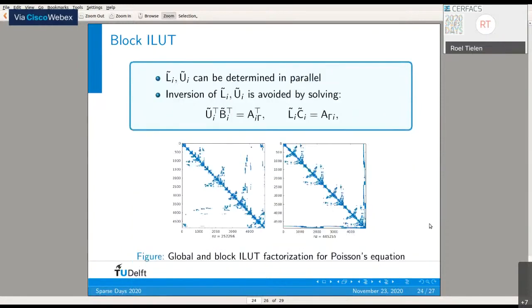What's important is that these L_i tilde and U_i tilde can be determined in parallel. The inversions are avoided by solving an equivalent linear system with multiple right-hand sides. Here you see the global ILU(T) factorization on the left, and on the right the block ILU(T) factorization—you really see this block structure popping up in the factorization as well.